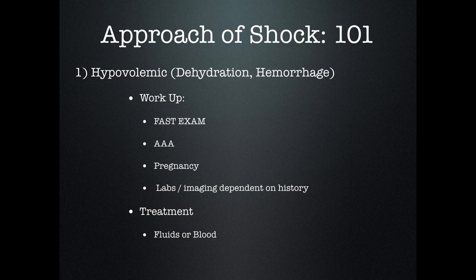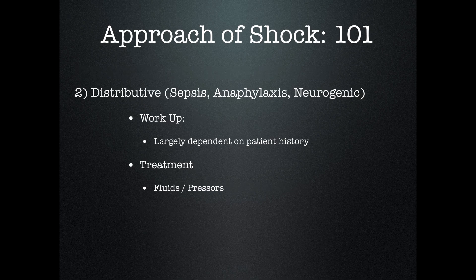Then you have to move on to the next step. You know they're hypovolemic — are they hypovolemic because they're in septic shock, distributive shock from anaphylaxis, or hemorrhagic shock from trauma? That's where clinical integration comes into play. If the patient is 60 years old complaining about flank pain and hypotensive, go do an aortic scan for triple-A. If the patient is a 20-year-old female with her last period three months ago, vaginal bleeding, and unstable, go look for an ectopic pregnancy. You have to use your clinical context.